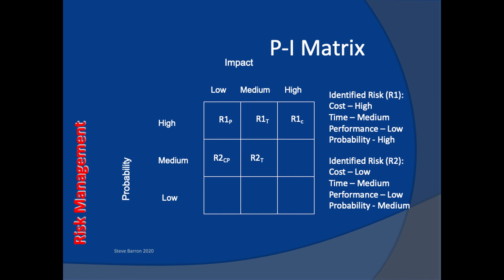Another risk, R2, here assessed as medium probability, has cost and performance identified as low risk. So these components are grouped together in the low impact, medium probability cell. The medium time risk is plotted in the middle cell.